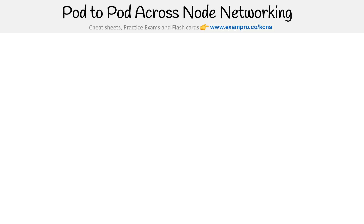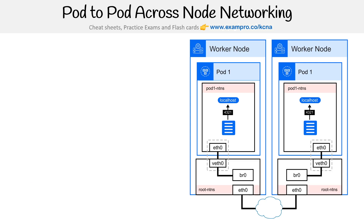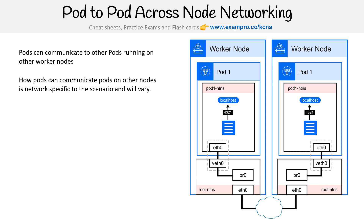Now let's look at cross-node communication. The diagram looks pretty similar, but there's something missing in between — we'll cover that when we look at services, so this diagram is intentionally incomplete. Pods can communicate with pods running on other worker nodes, but how that works is network-specific. It's going to be specific to your scenario and will vary based on your provider.